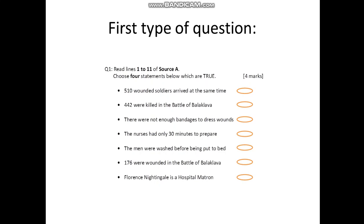We're going to have a look at the first type of question instead of going to the text straight away. You know how to read two texts — read the questions first, because then you can know what you're looking for as you're reading the text. The first type of question is really quite easy, though there are things that can go wrong. All you've got to do is find out which statements are true. They might sneak some things in there that you're not expecting, so be careful. Reading the question carefully is very important, and reading the text carefully is very important too.